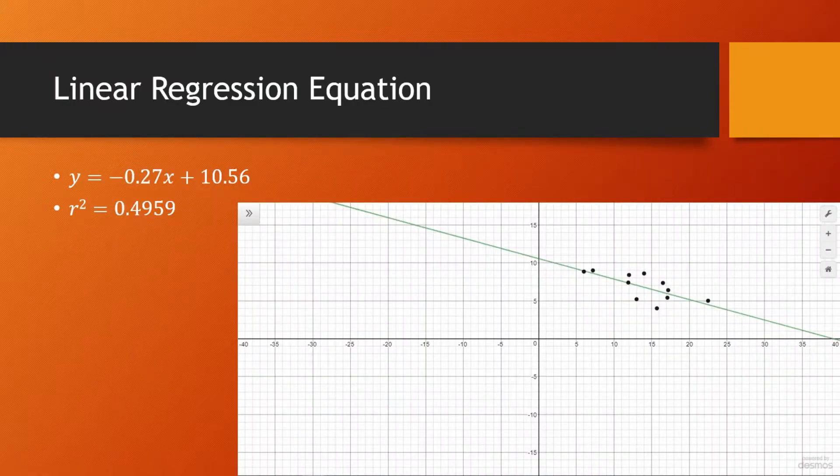So the first regression that we found was the linear regression. As you can see this equation is a fairly good fit for the data however there's still a fairly large gap between the minimal two points and the actual equation.